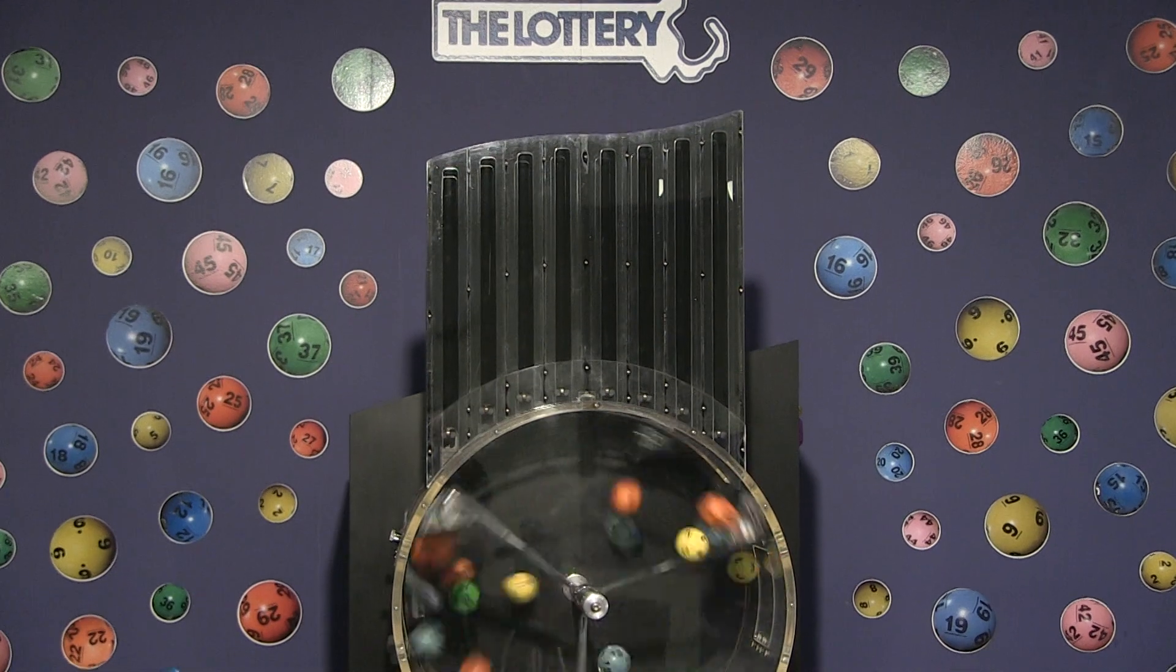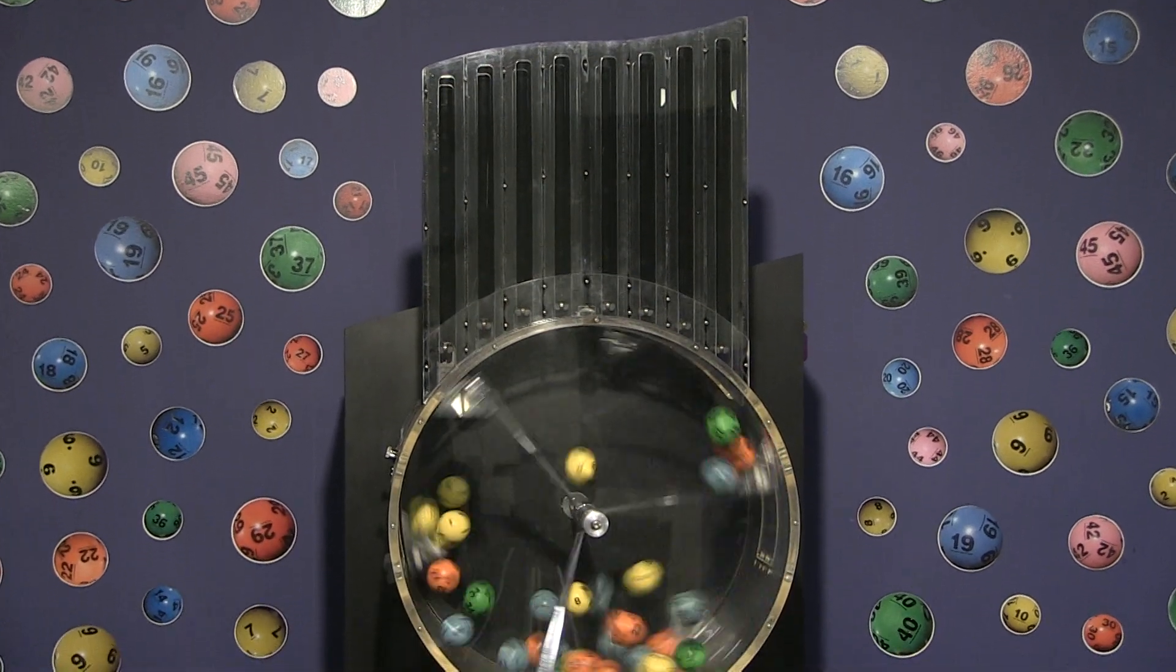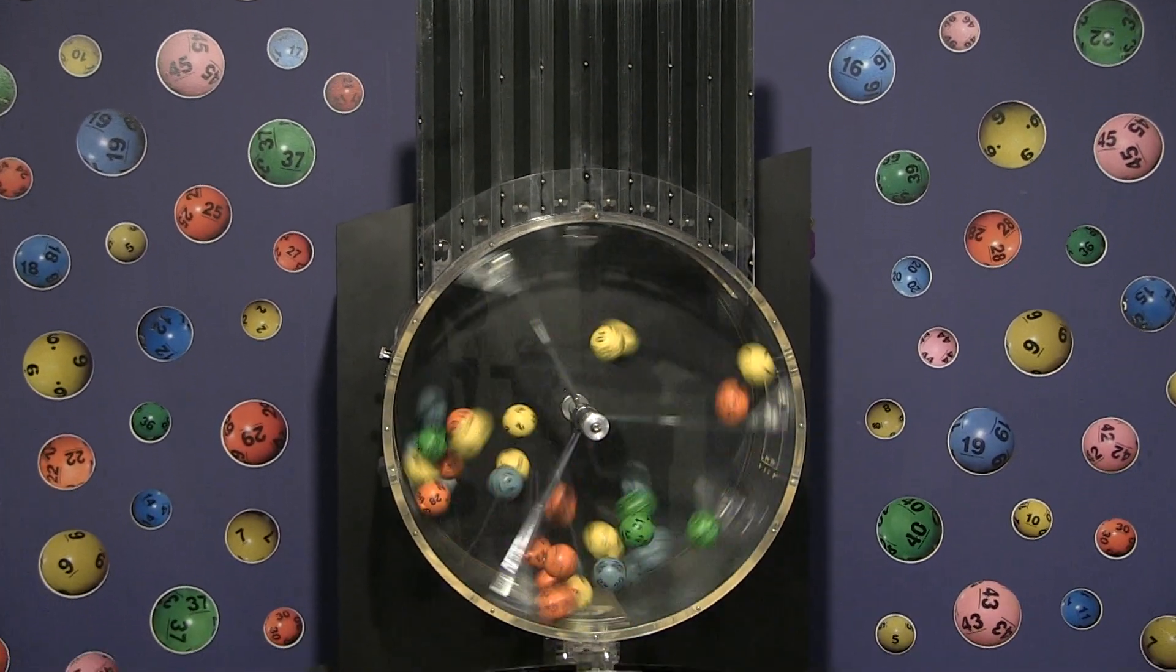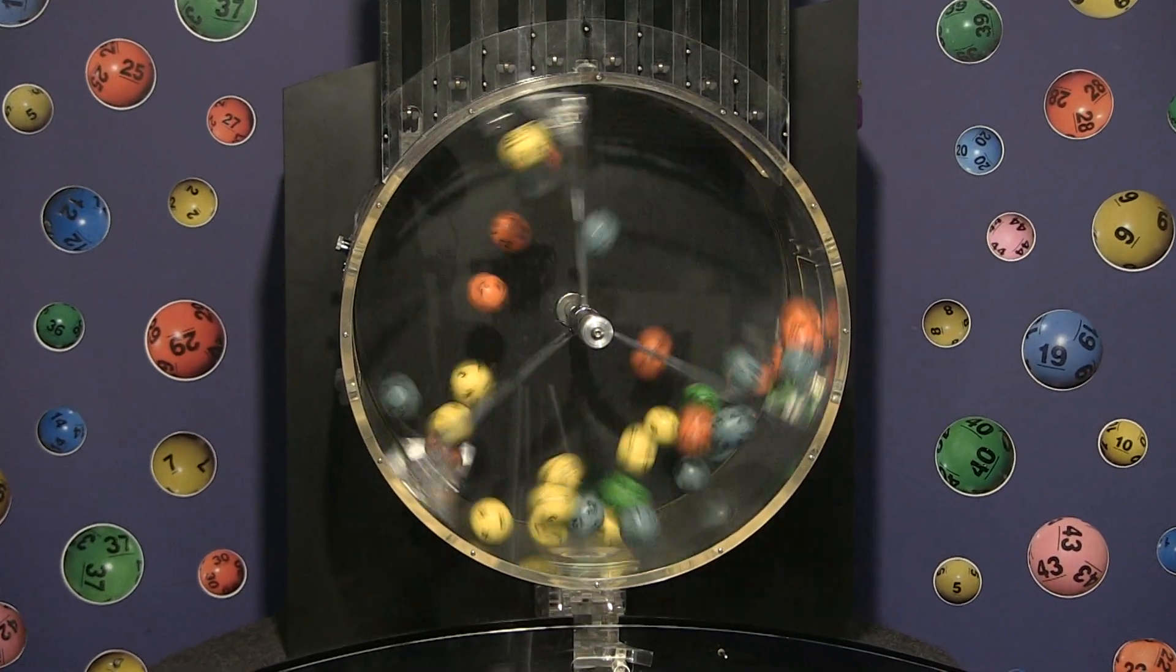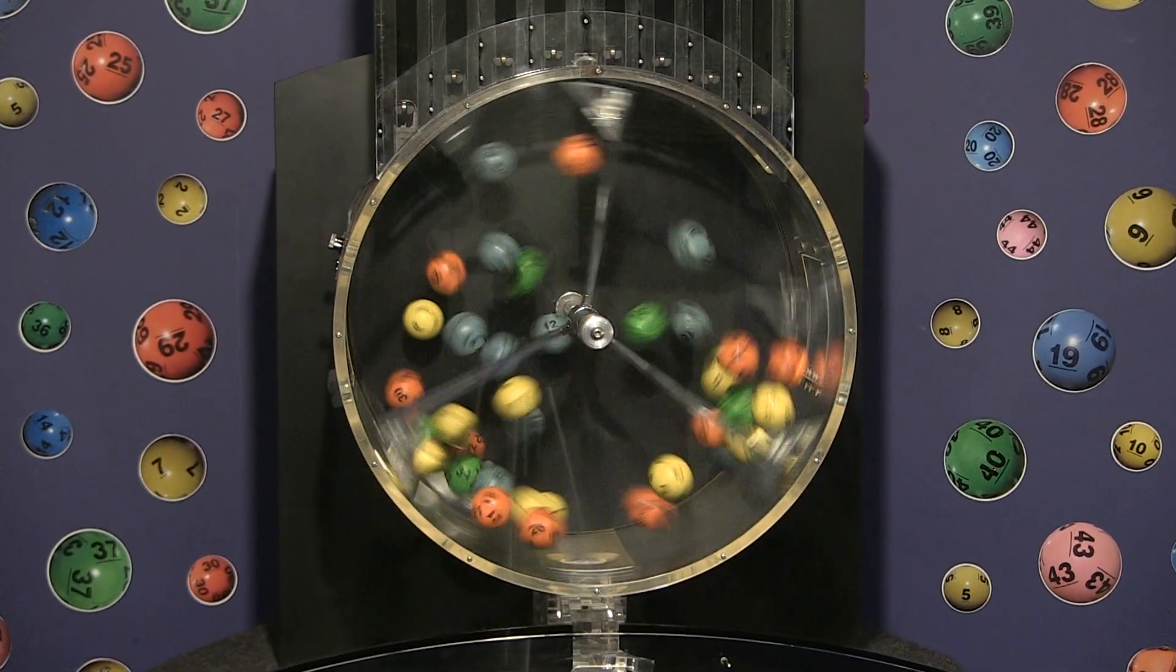Good evening, this is Paul and welcome to the Mass State Lottery's Mass Cash drawing for Thursday, April 18th, 2019 on masslottery.com. Stay logged on because coming up shortly is the Lucky for Life drawing. Now let's see how you did in tonight's drawing.